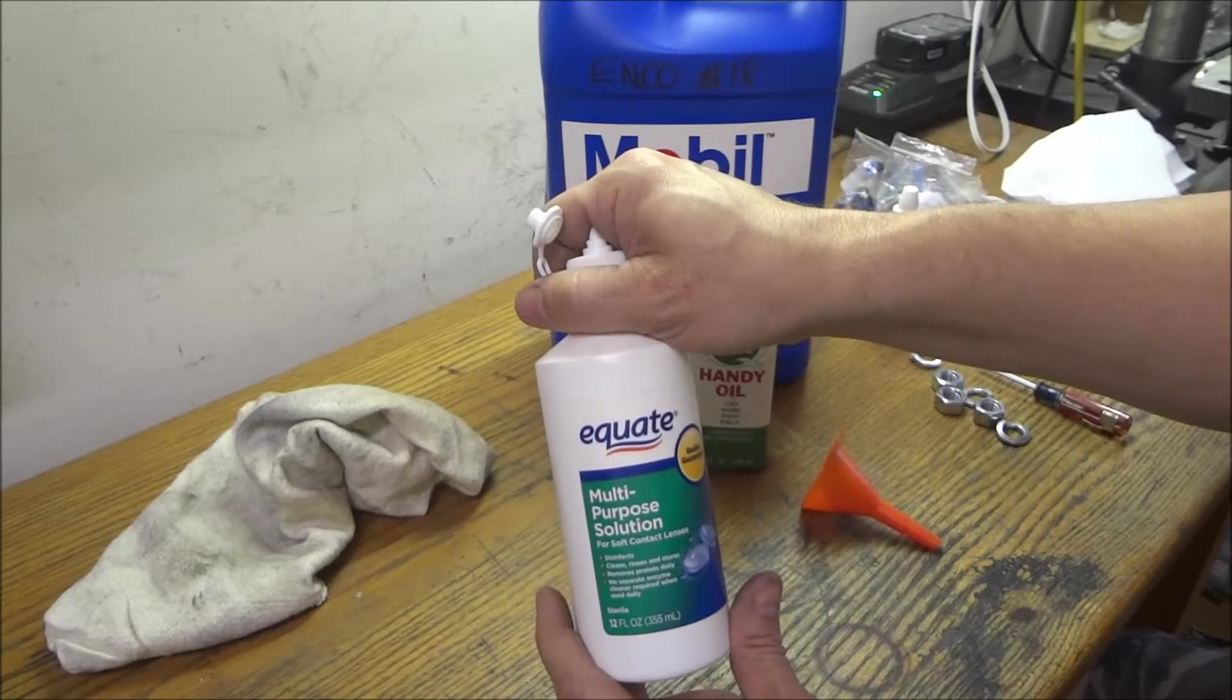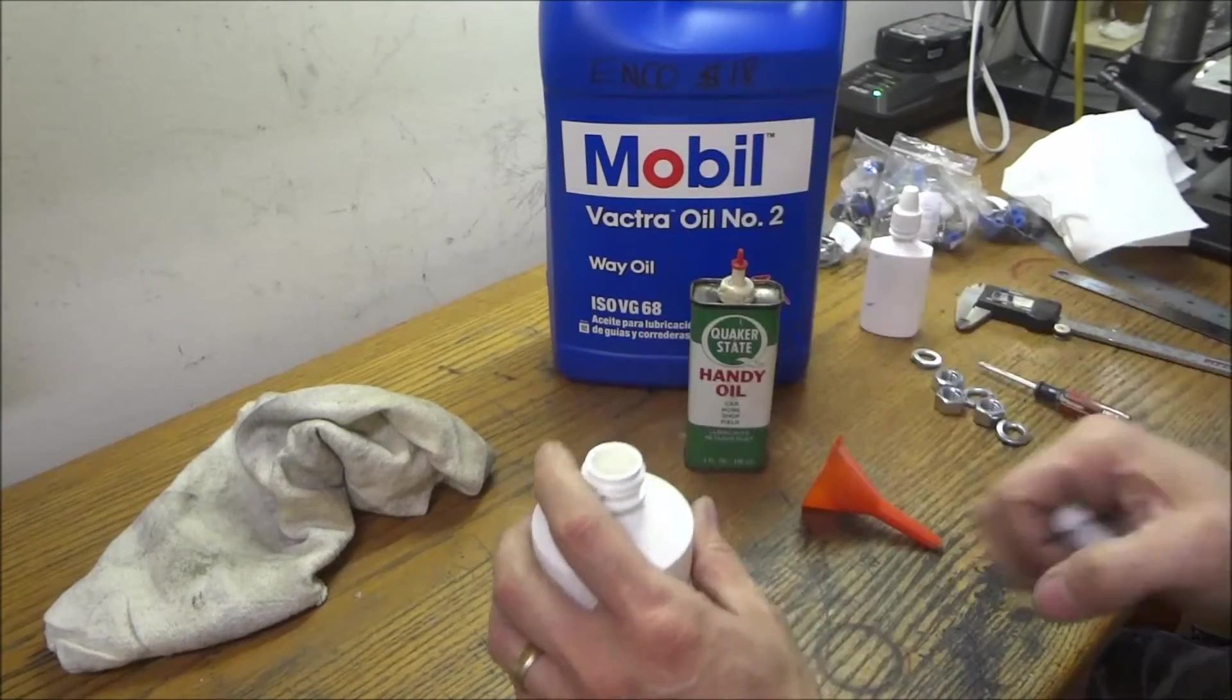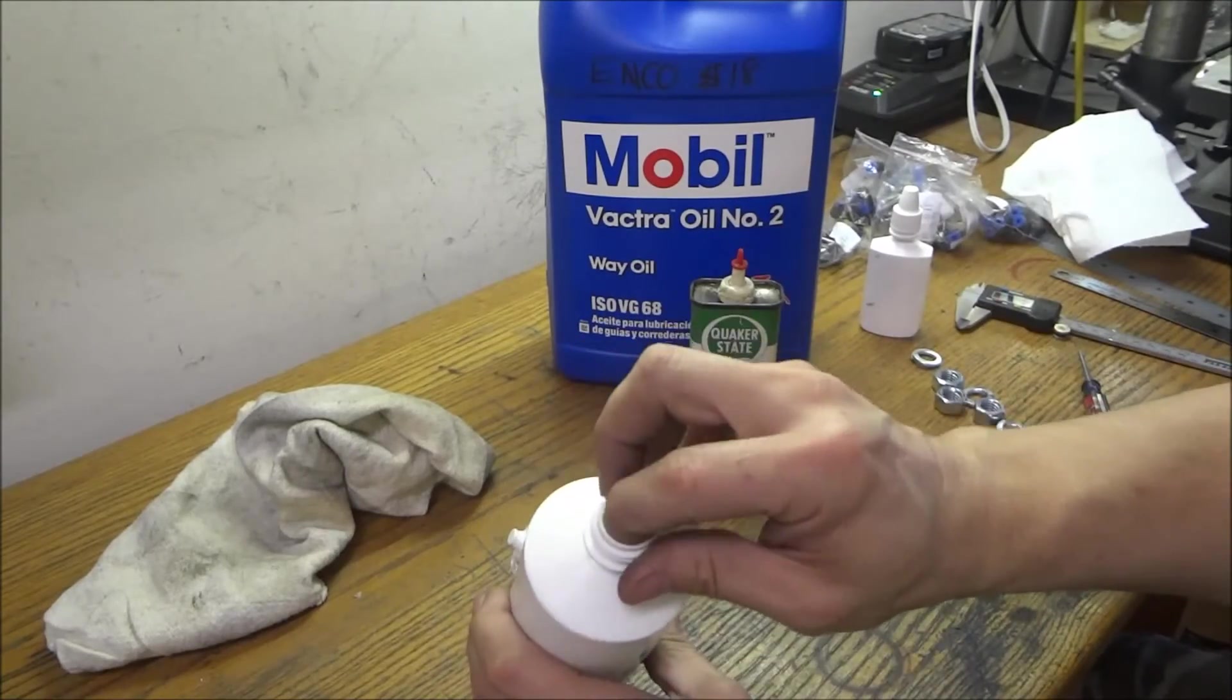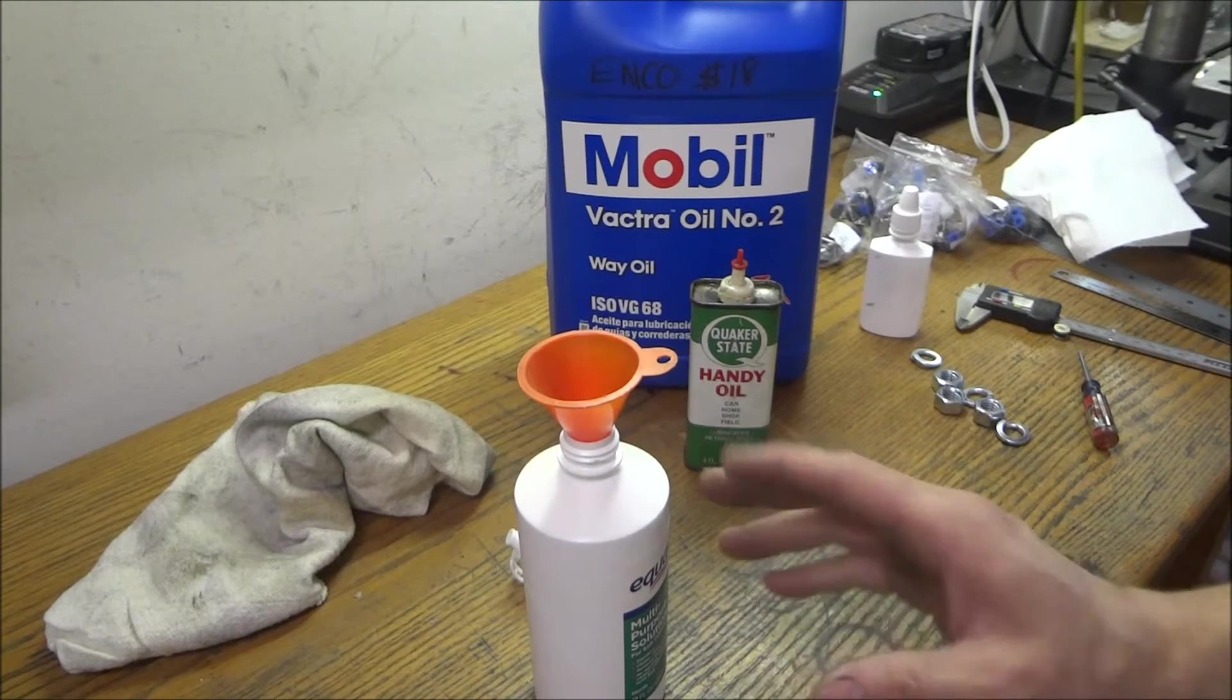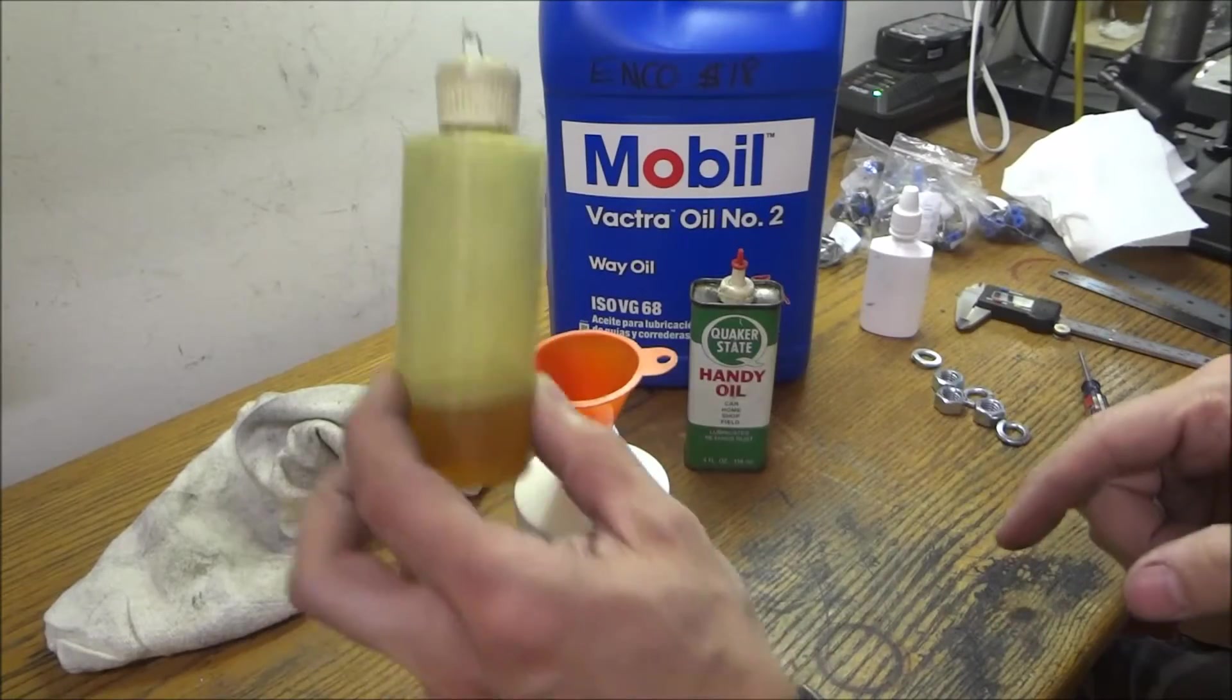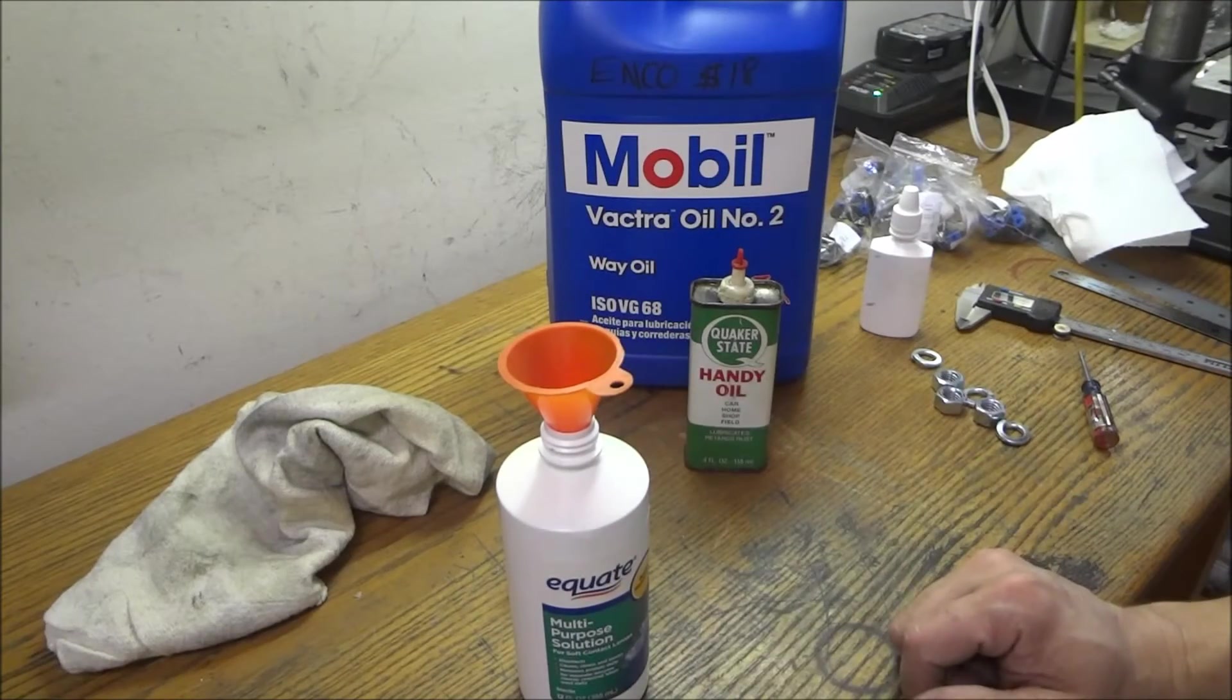Likewise you can take one of these contact solution bottles - some saline solution. You can't screw this cap off, you have to pop it off with a screwdriver, but it has a nice little spout with a lid and you can fill this with way oil. This is a good size oiler. You've seen me use this little flip top bottle with motor oil and kerosene mixture for threading. I just thought I'd share this quick tip.